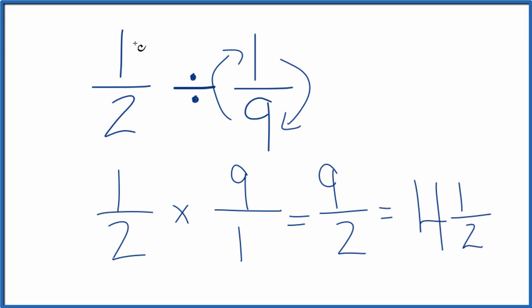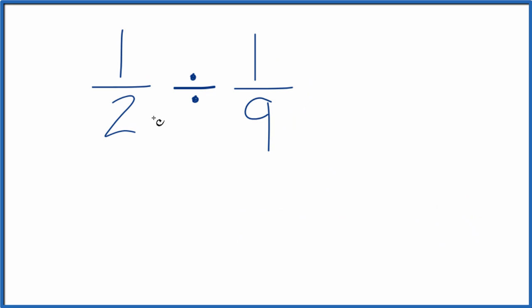There is another way you can divide one-half by one-ninth. Let's give that a try. You could multiply one times nine, that gives you nine. Two times one, that gives you two, and you end up with nine over two. That's what we got before. This is essentially multiplying by the reciprocal, just a little different way to go about doing that.